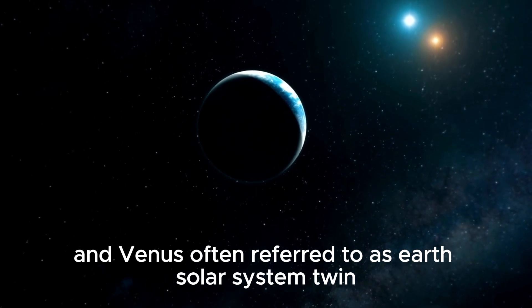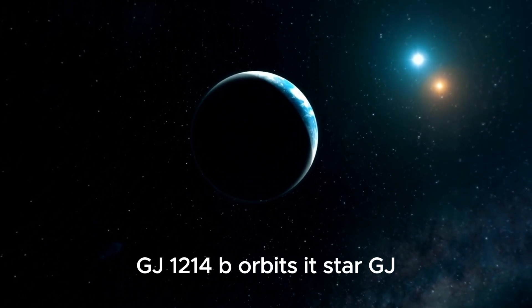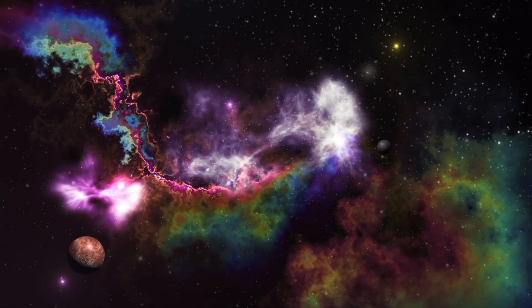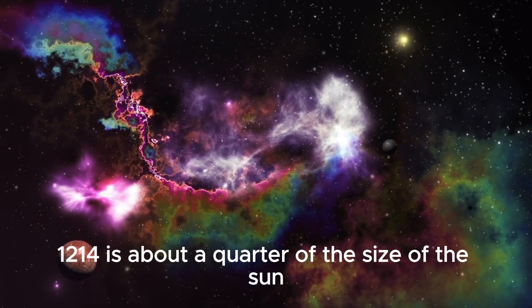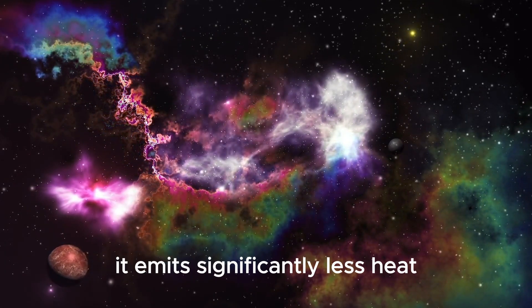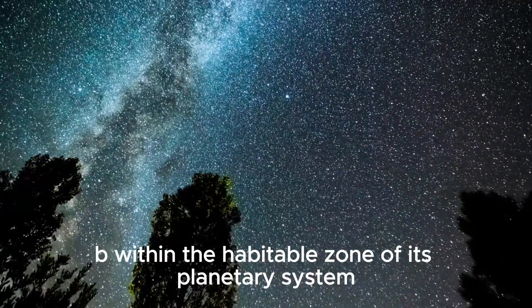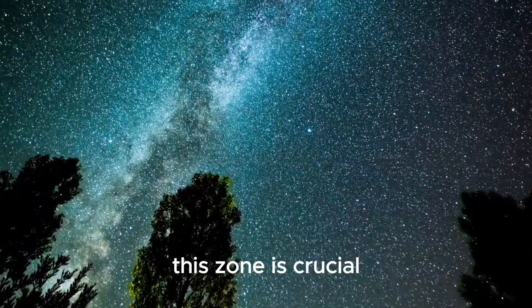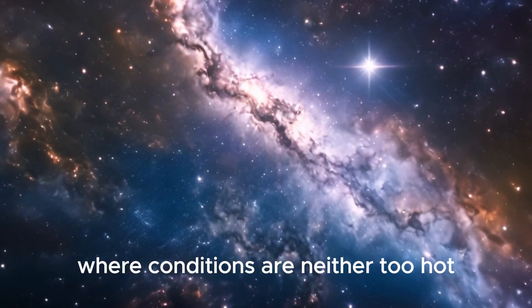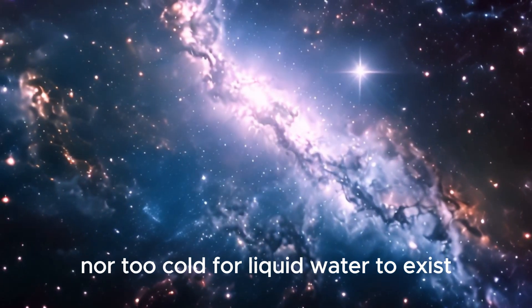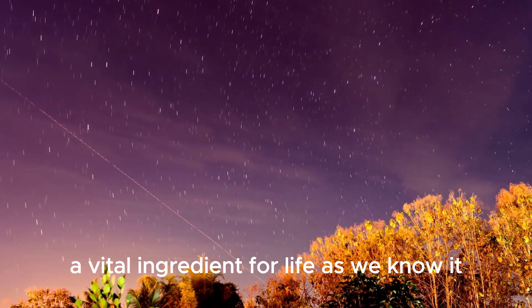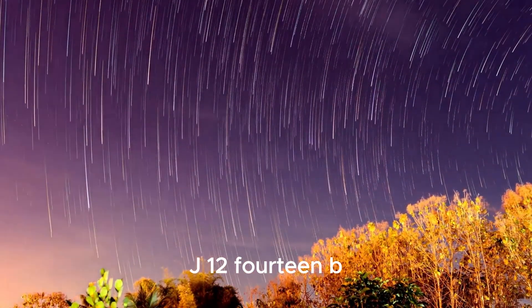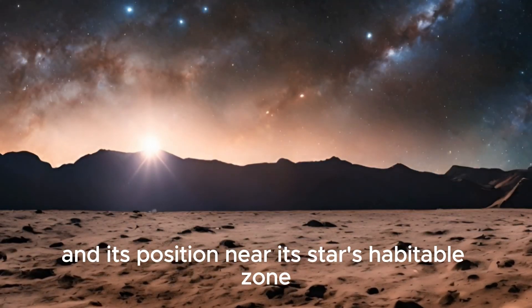Often referred to as Earth's solar system twin, GJ 1214b orbits its star GJ 1214 so closely that its year lasts just 12.8 Earth days. However, because the red dwarf GJ 1214b is about a quarter of the size of the sun, it emits significantly less heat. This positions GJ 1214b within the habitable zone of its planetary system, also known as the Goldilocks zone. This zone is crucial as it denotes an area around a star where conditions are neither too hot nor too cold for liquid water to exist, a vital ingredient for life as we know it.